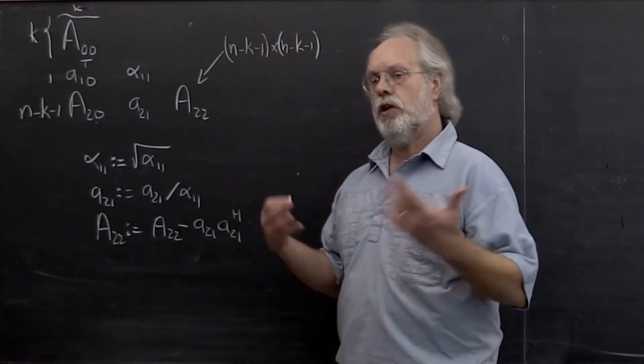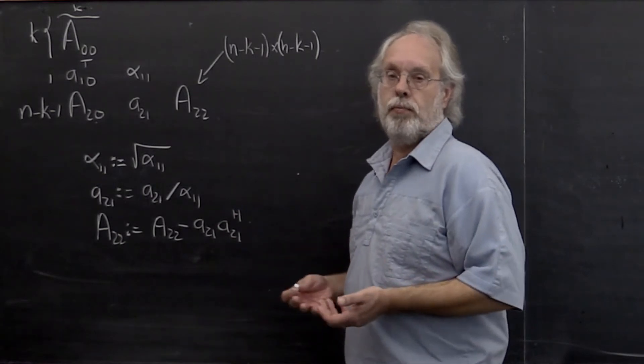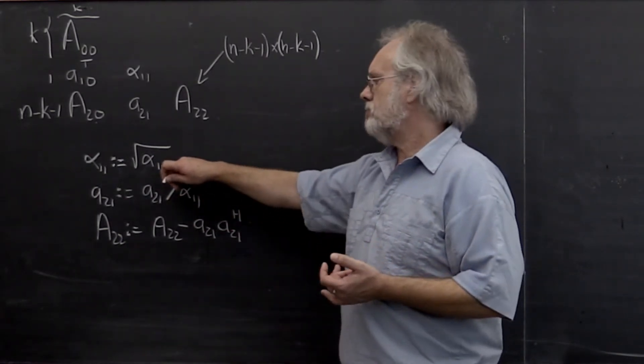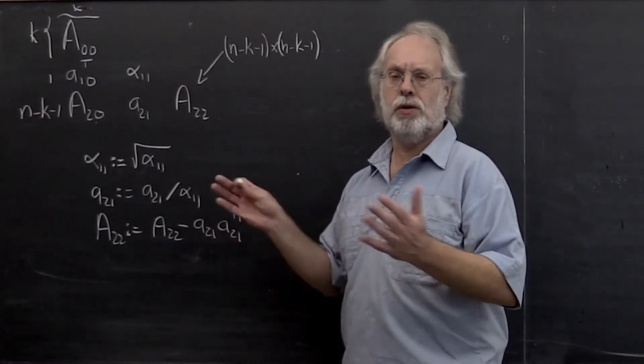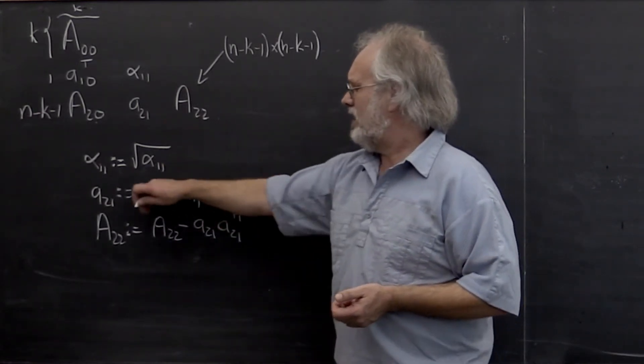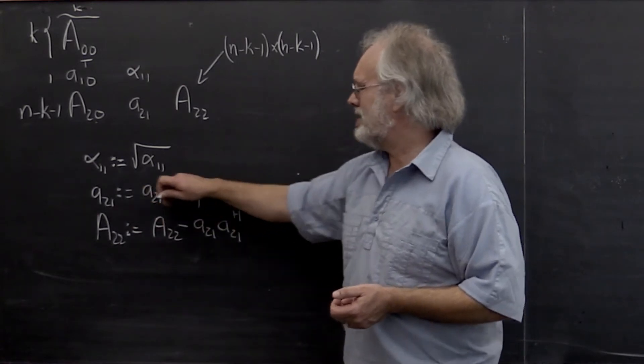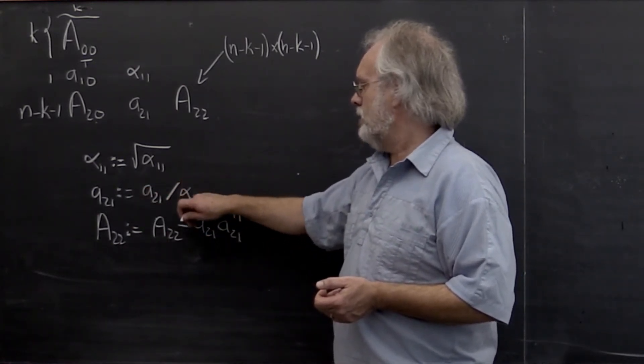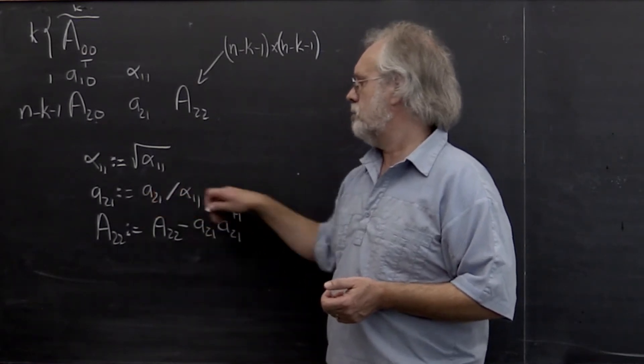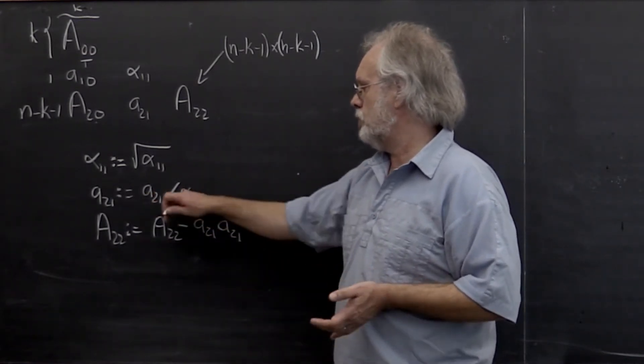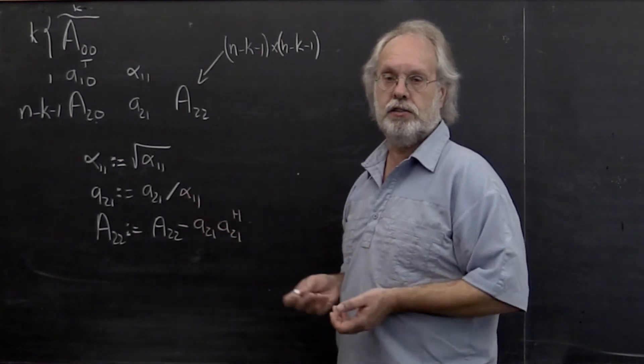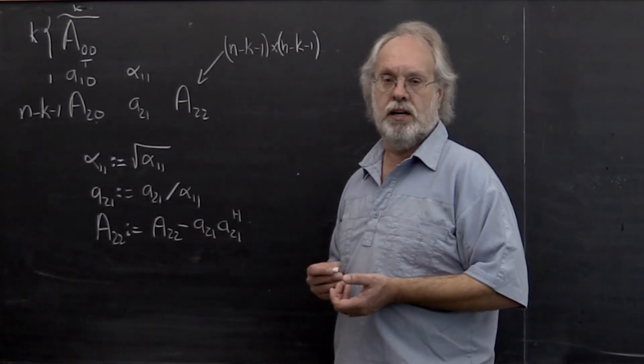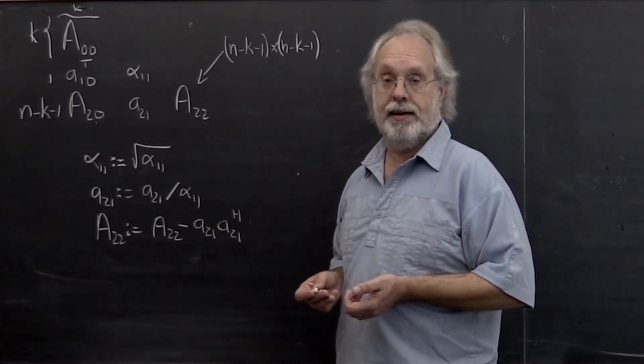Now, we can get into an argument about how many floating-point operations are required to do a square root. But it turns out that's going to be a lower order term so we don't care. Similarly, we can argue about how exactly to do this. Should we divide 1 by alpha 1 1 and then multiply that times the vector? Or should we just divide into the vector? But it turns out that's not where the computational expense is anyway.